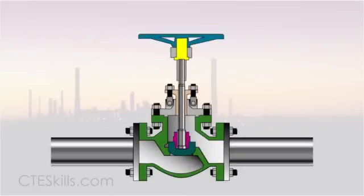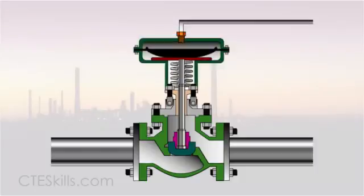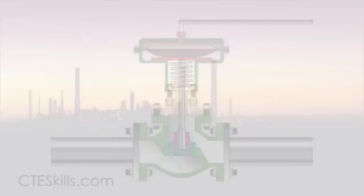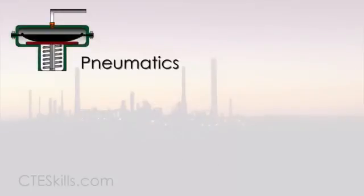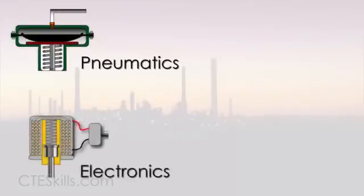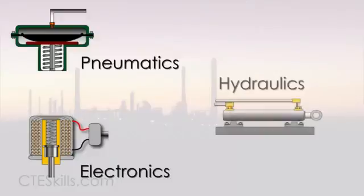Any valve can be turned into a control valve simply by adding an actuator. Valve actuators, in response to a signal, move a valve to a desired position using an outside power source. These outside power sources may be in the form of pneumatics, electronics, or hydraulics.